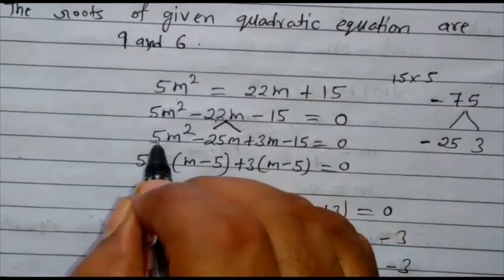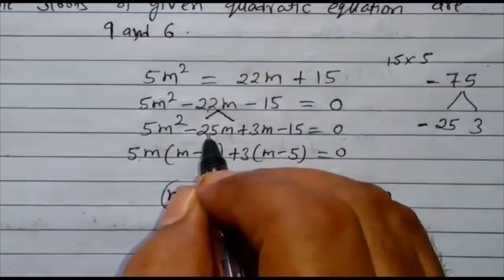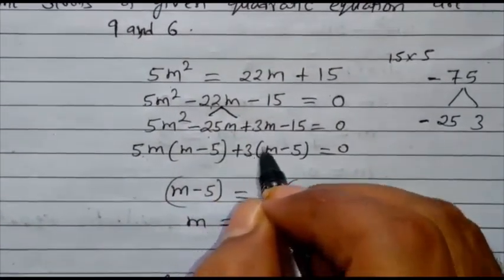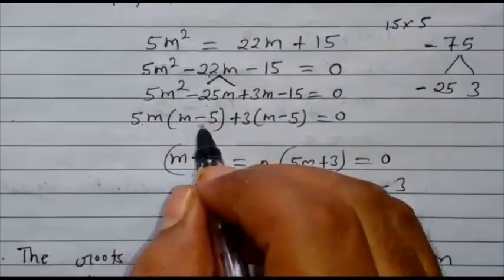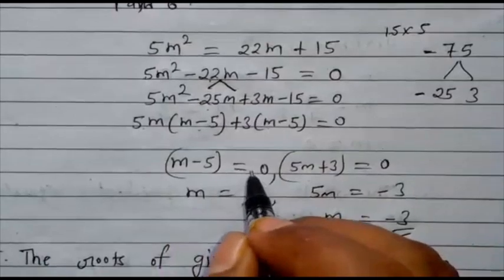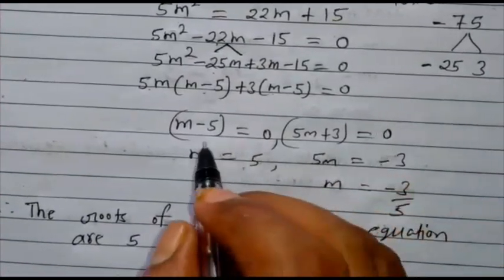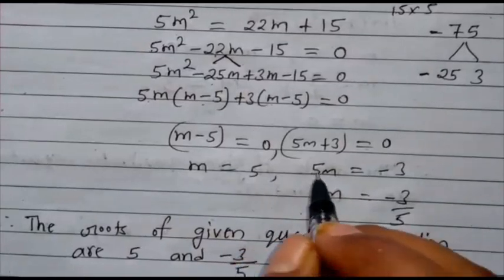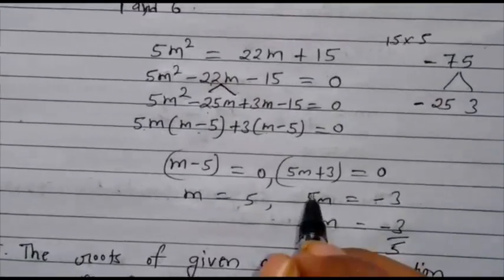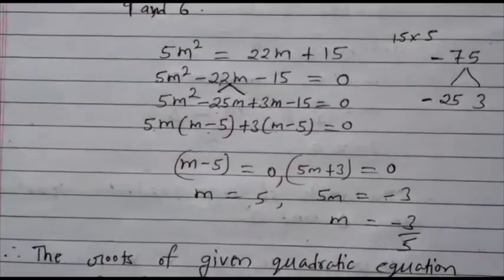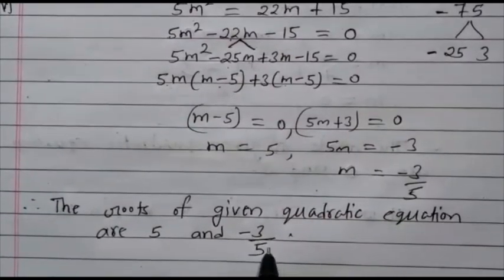Now take the common. From the first pair, take 5m: what is left? m minus 5. From the second pair, take plus 3: what is left? m minus 5. So m minus 5 is common: (m minus 5)(5m plus 3) equals 0. Therefore m minus 5 equals 0 giving m equals 5, and 5m plus 3 equals 0 giving m equals minus 3 upon 5. The roots of the given quadratic equation are 5 and minus 3/5.